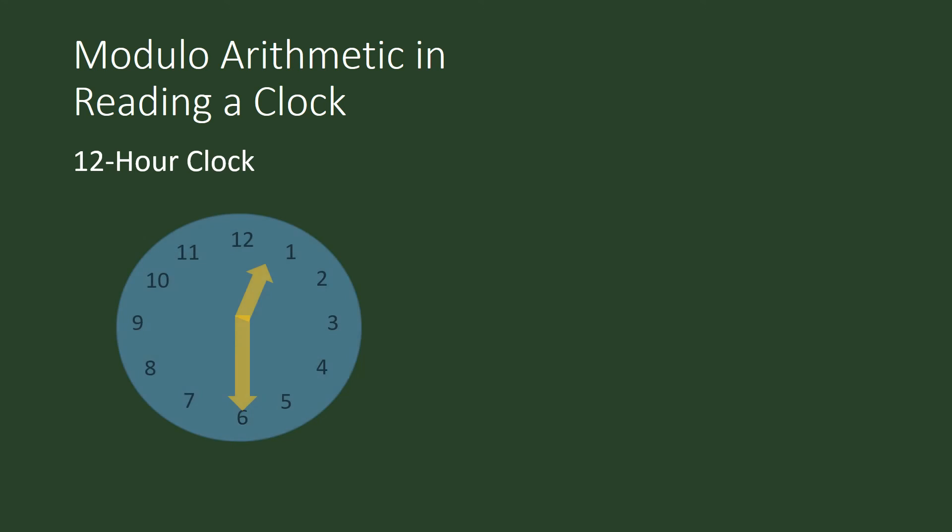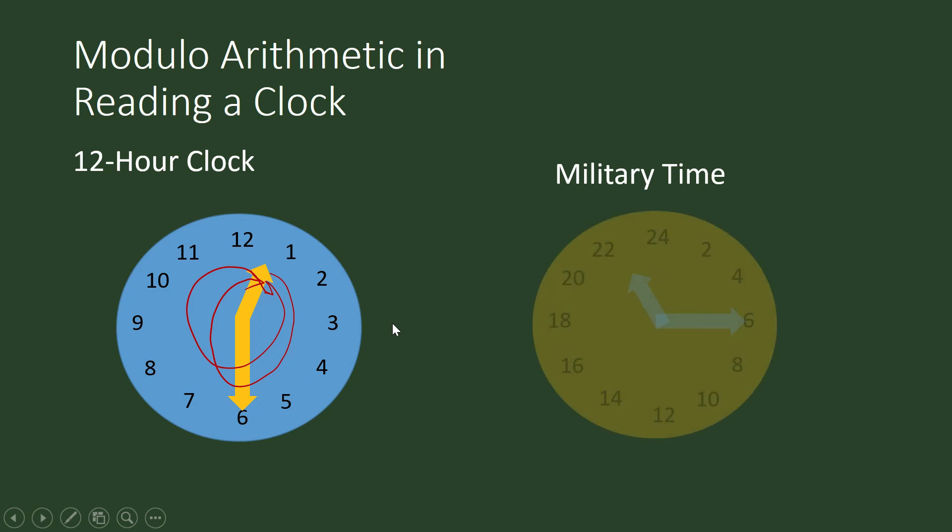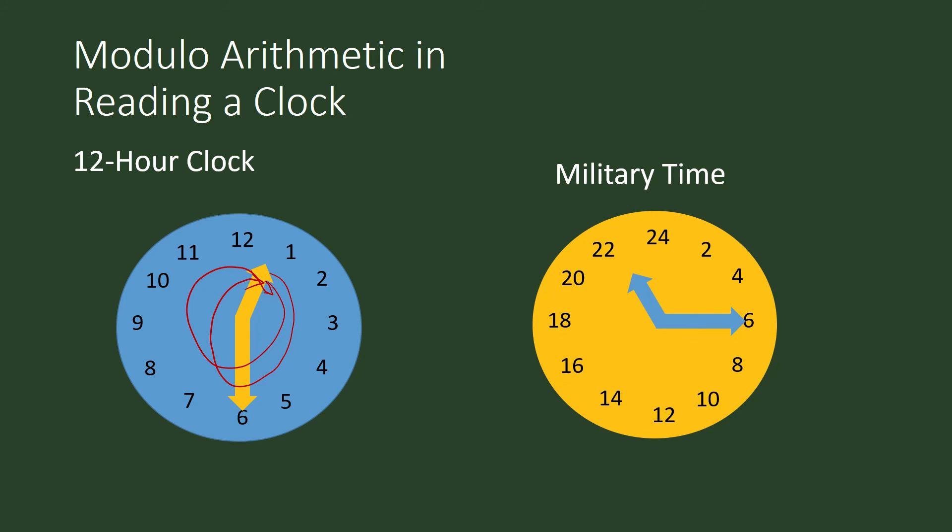We also see modulo n arithmetic in reading the 12-hour clock. After one revolution, we begin with 1 o'clock again. After another revolution, we begin with 1 o'clock again. We don't go on counting the hours up to infinity. We do it in cycles. We also see this in military time with a cycle of 24 hours instead of 12.